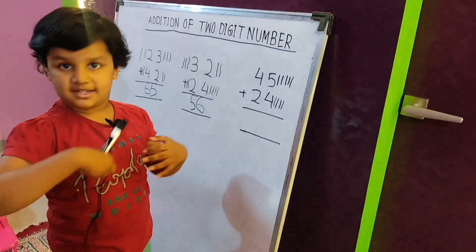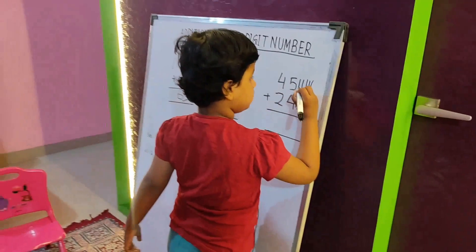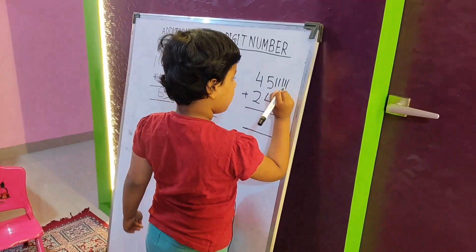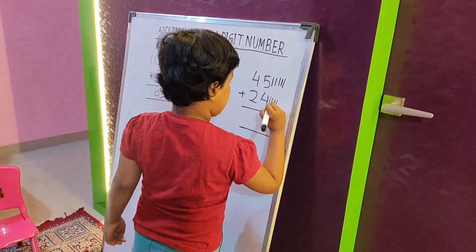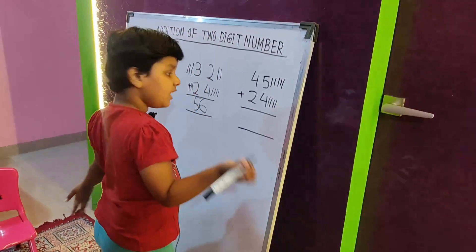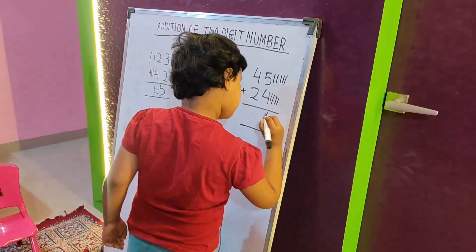And how many mix number? One, two, three, four, five, six, seven, eight, nine. This is nine.